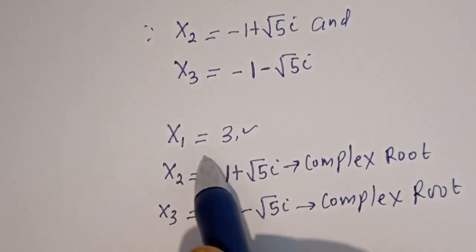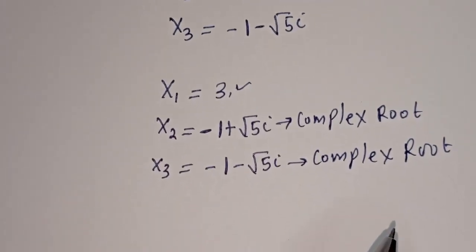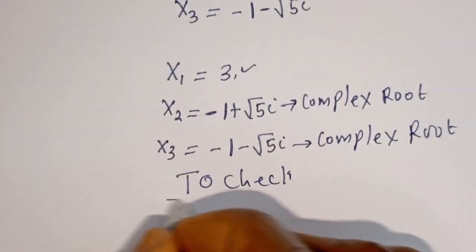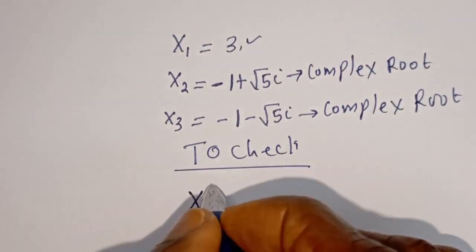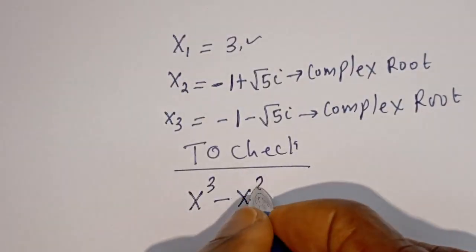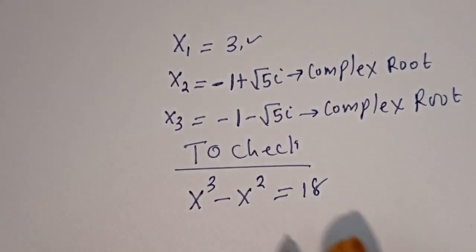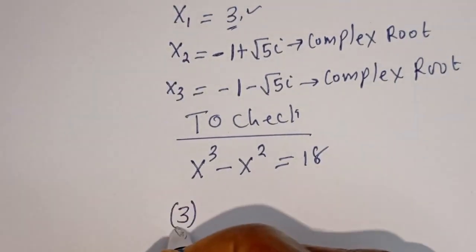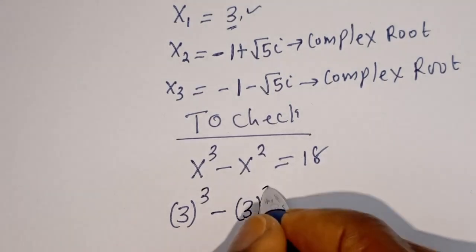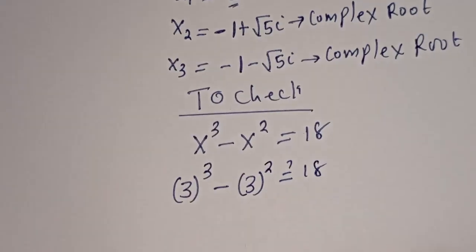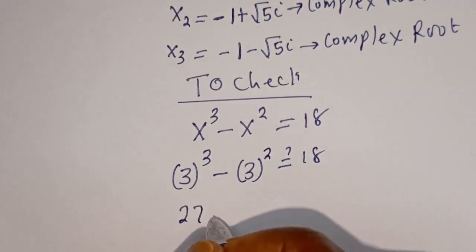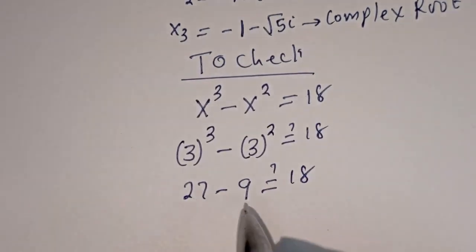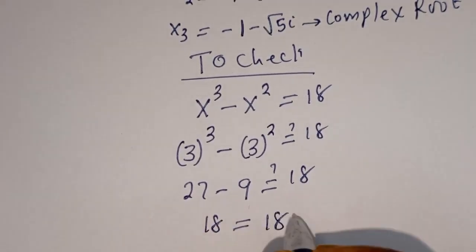The only real root we have is S1 equal to 3. We can check to confirm if the answer is right. To check: the given equation is S cubed minus S squared equals 18. When S equals 3, we have 3 cubed minus 3 squared, which is 27 minus 9, equal to 18. Then 27 minus 9 is 18, equals 18, which is true.